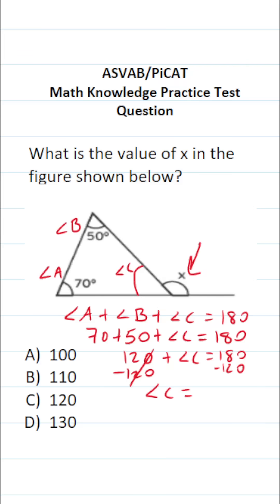In doing so, this says the measure of angle C equals 180 minus 120, which is 60. So we know the measure of angle C is 60 degrees.